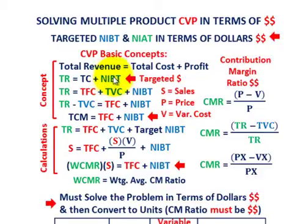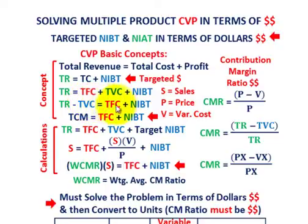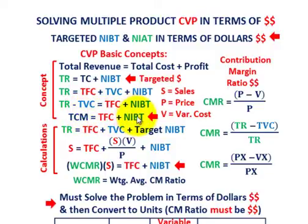Looking at it in terms of net income before taxes, that would be some targeted amount. Our total revenues equals our total fixed cost plus our total variable cost, plus some net income before taxes. Rearranging the equation, our total revenues less our total variable cost equals our total fixed cost plus net income before taxes — and that difference is really our total contribution margin.